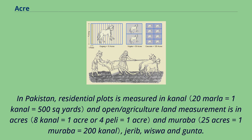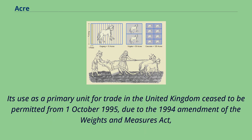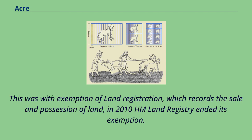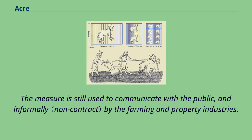Its use as a primary unit for trade in the United Kingdom ceased to be permitted from October 1, 1995, due to the 1994 Amendment of the Weights and Measures Act, where it was replaced by the hectare, though its use as a supplementary unit continues to be permitted indefinitely. This was with exemption of land registration, which records the sale and possession of land; in 2010, land registry ended its exemption. The measure is still used to communicate with the public and informally by the farming and property industries.